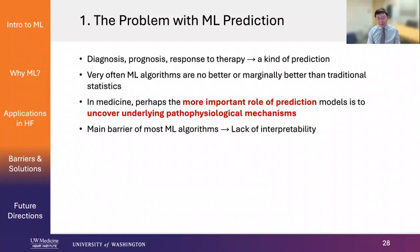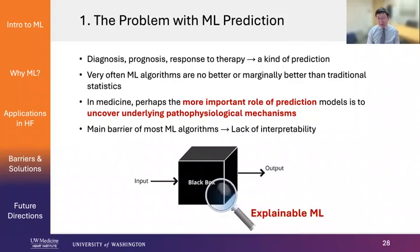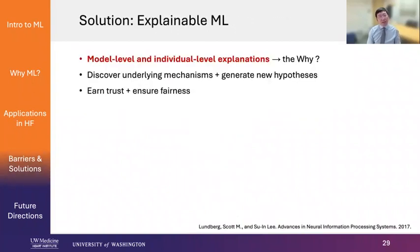A lot of people feel like we cannot trust machine learning algorithms. But one solution we have now is something called explainable machine learning. Explainable machine learning methods help us come up with model-level and individual-level explanations — that goes to the 'why' question. Explainable machine learning can help us discover underlying mechanisms, generate new hypotheses, and really help us build trust and ensure fairness.